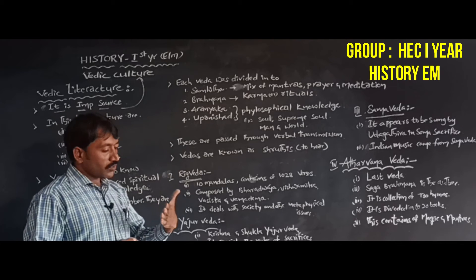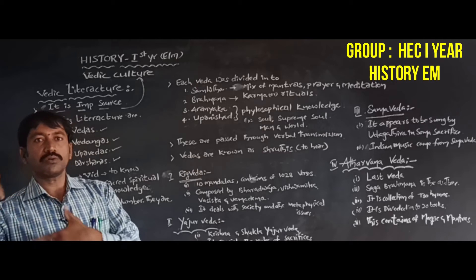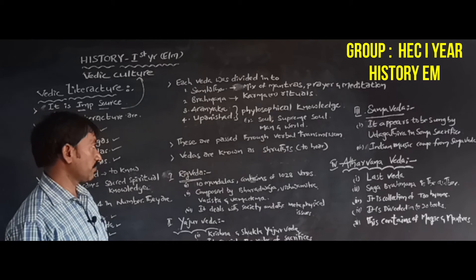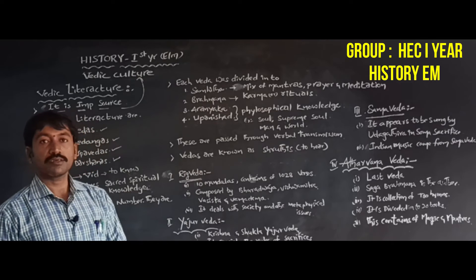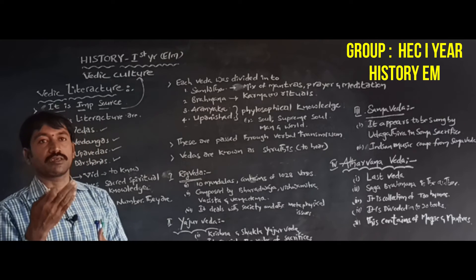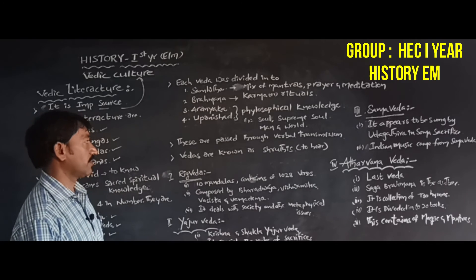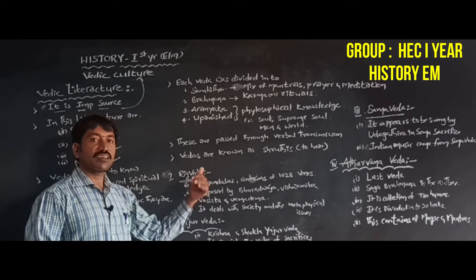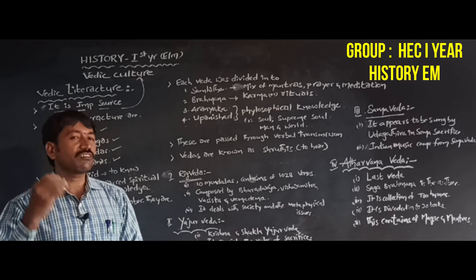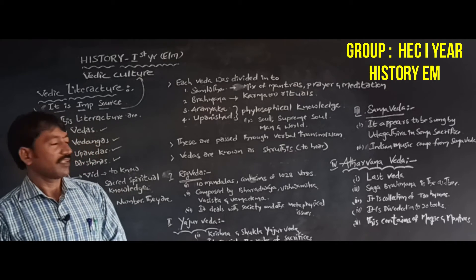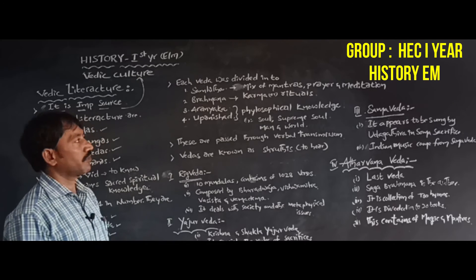How were the Vedas transmitted from one generation to another? They were passed through verbal transmission — from one generation to the next. That is why Vedas are known as Shrutis, which means 'to hear.'